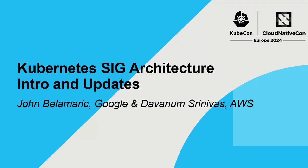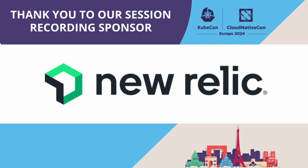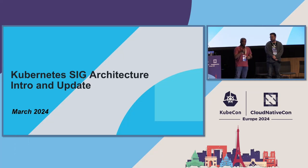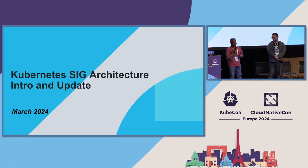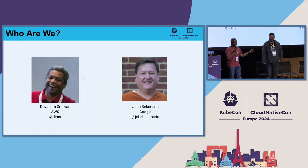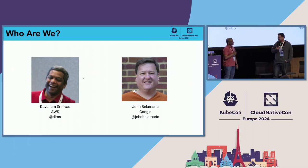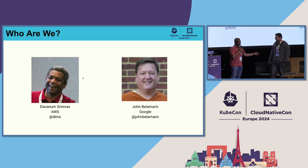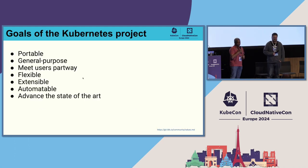Hi everyone. My nickname is Dims. I'm on Slack and Twitter as Dims. This is the SIG architecture intro and update room. If you're not interested in the topic, you're in the wrong room. Hi everybody, I'm John Bellamarek, and Dims and I are two-thirds of the SIG architecture co-chairs. He works for Google, I work for AWS, and here we are in the community trying to do things together.